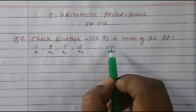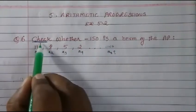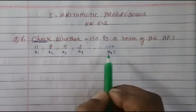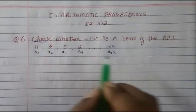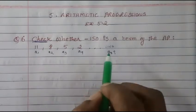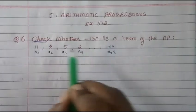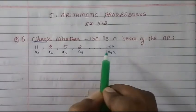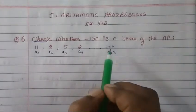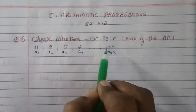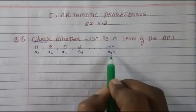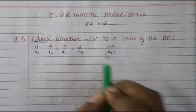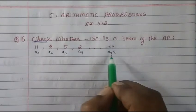They are asking us to check whether minus 150 is a term of this AP or not. So we have to check whether minus 150 belongs to this arithmetic progression. Arithmetic progression means there is a pattern of numbers, and we need to find out whether minus 150 belongs to this set.